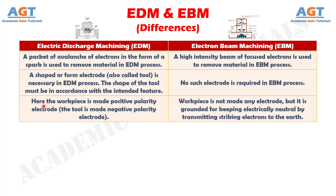Number 3: In Electric Discharge Machining, the workpiece is made the positive polarity electrode and the tool is made the negative polarity electrode, whereas in Electron Beam Machining the workpiece is not made any electrode, but it is grounded for keeping electrically neutral by transmitting striking electrons to the earth.